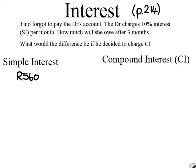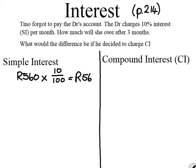The interest is 10%, so 10% of 560 Rand — remember, 10% is 10 over 100 — so 10% of 560 Rand is going to be 56 Rand. This is purely the interest.